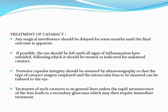Treatment of cataract: any surgical interference should be delayed for some months until the final outcome is apparent, because immediately after trauma there may be inflammation — you should not operate when inflammation is present. Start anti-inflammatory treatment, wait a few months, ensure the eye is quiet and there are no other comorbidities, then operate with a good prognosis. If there are comorbidities like macular edema, operate with guarded prognosis. Posterior capsular integrity should be assessed by ultrasonography so that the type of cataract surgery and the intraocular lens to be inserted can be tailored to the eye.